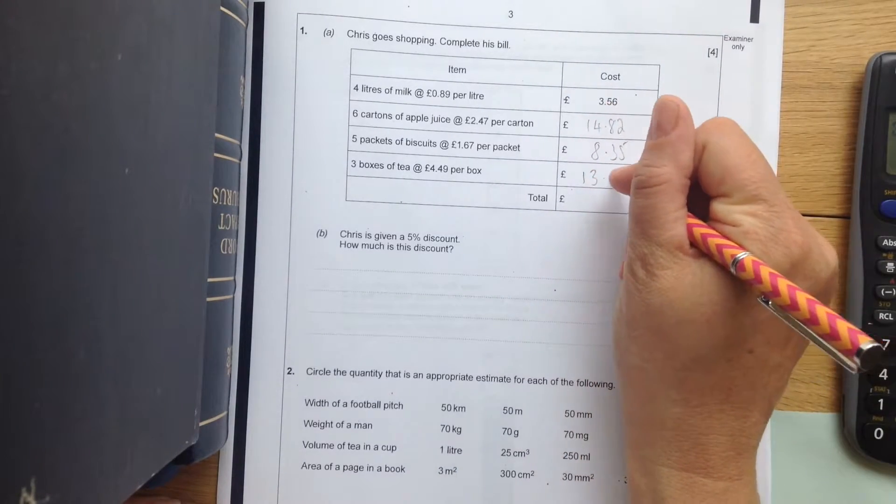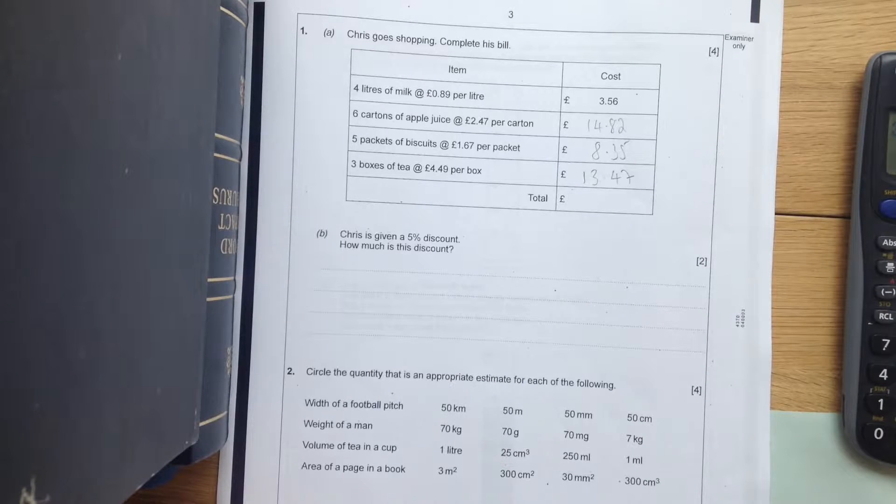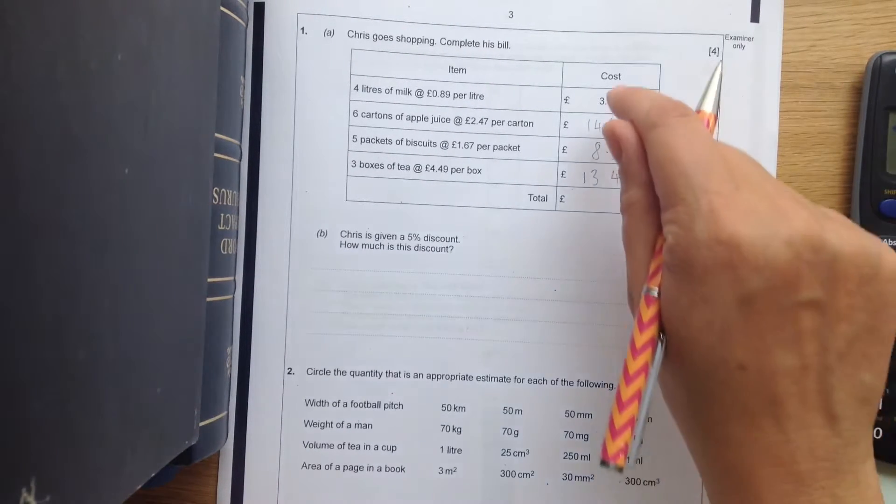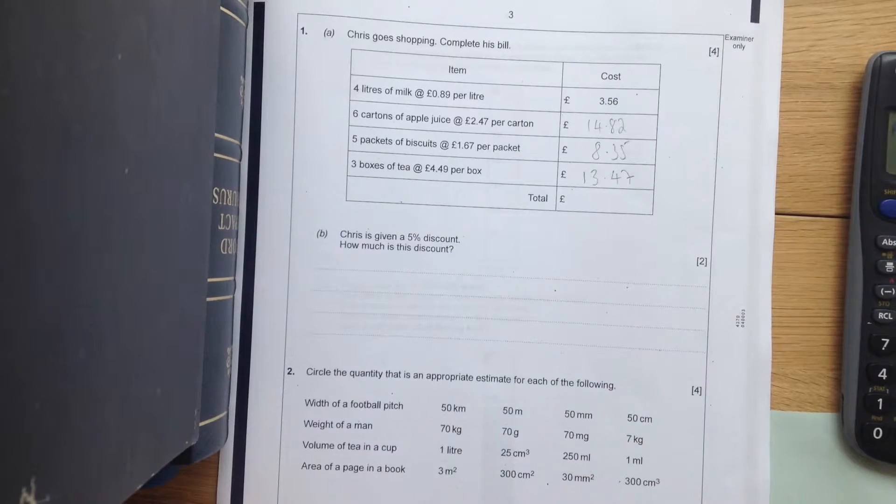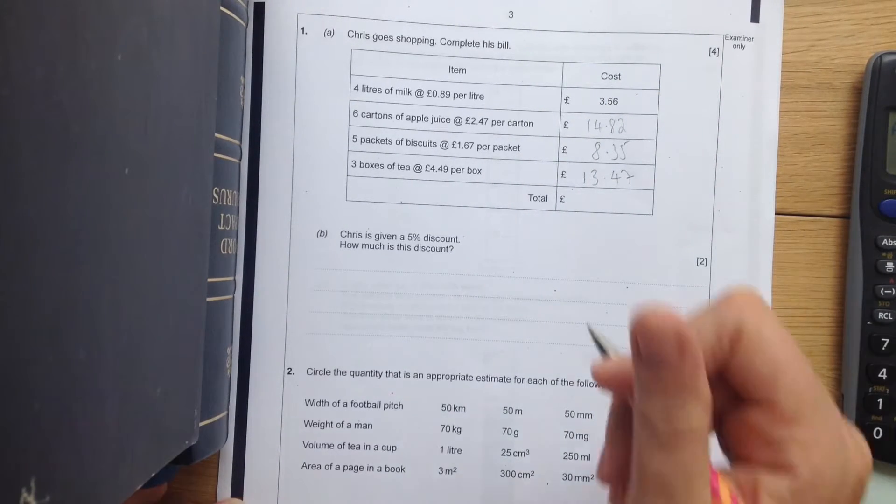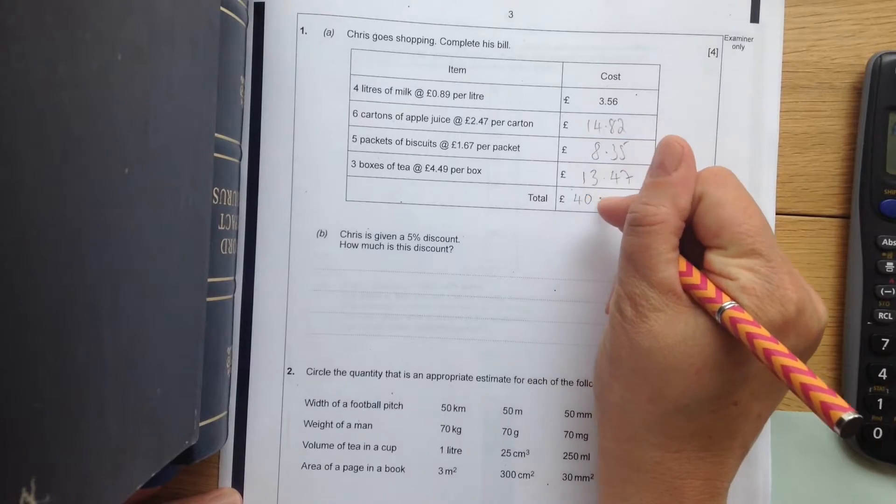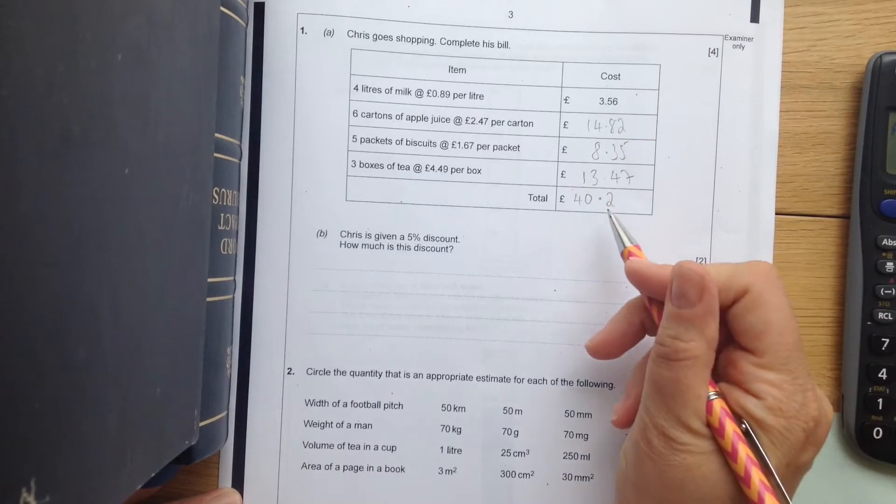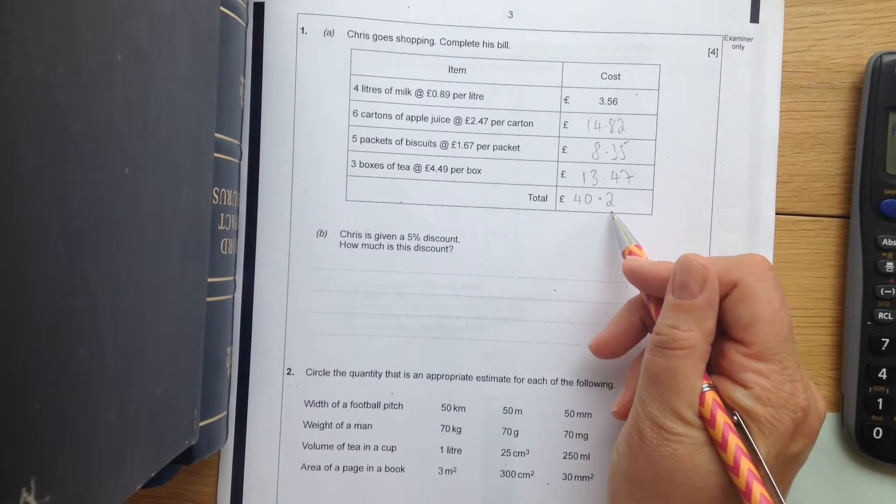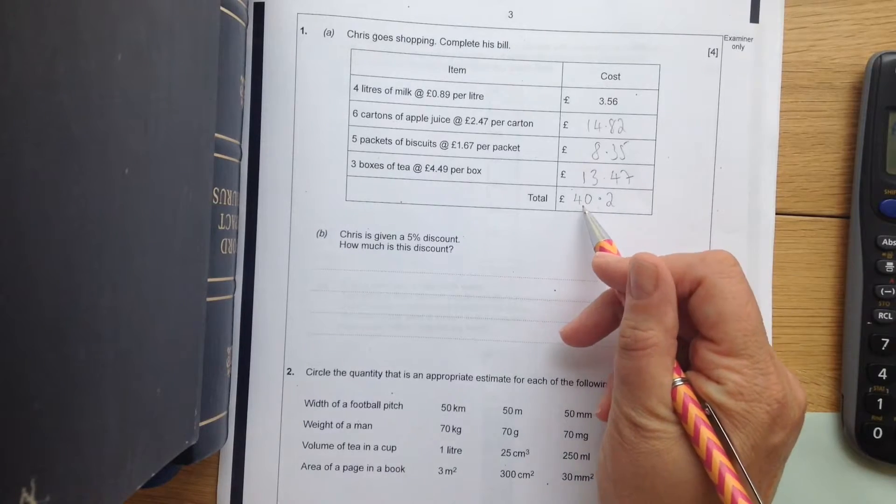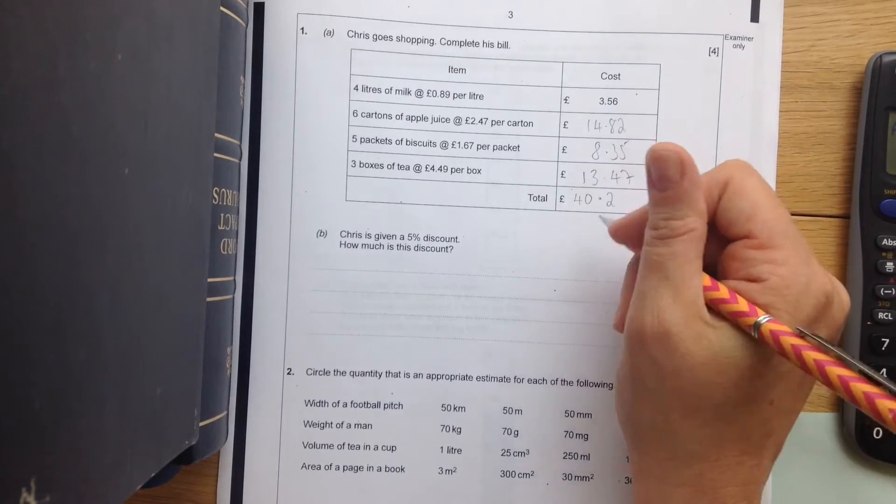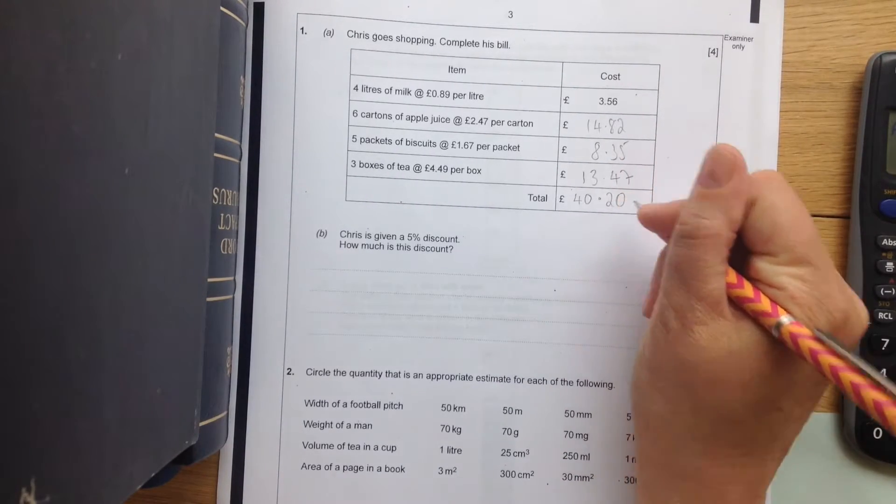Now we need to add them up. Don't forget to add that last one on because that's the one that people tend to miss out by mistake. And the answer I've got is forty point two. Now we don't have point two when we talk about money. This is actually forty pounds and twenty pence. We've got to put that zero on the end to get the mark.